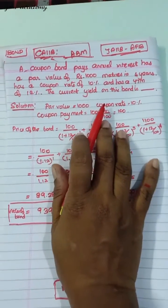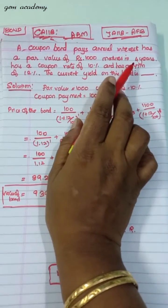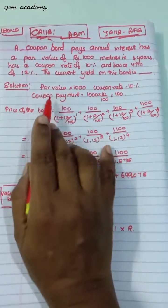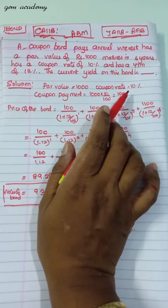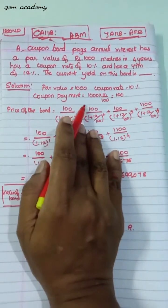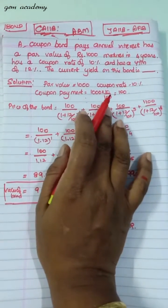We need to find the current yield. The given information is: coupon bond pays annual interest, par value is 1000, and coupon rate is 10%. So we can find the coupon payment. Coupon payment is 1000 into 10%, that is 100.